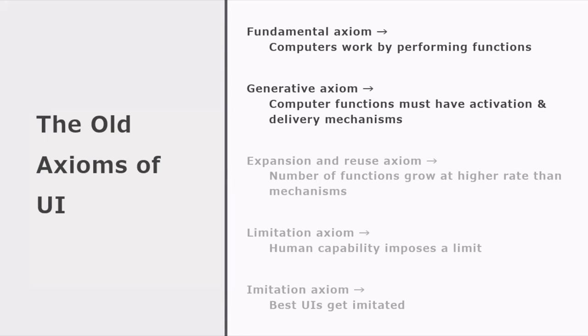The second axiom is the generative axiom. Computer functions must have activation and delivery mechanisms. This is the generative axiom because it generates the idea of user interfaces. In order to access the functions, we need to activate that function. And we also need to access the deliveries of that function. And those are two different mechanisms, the activation and the delivery mechanisms. We need to find something to activate the function and something to get the results from the computer.